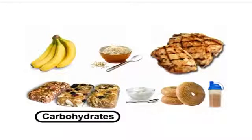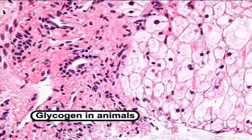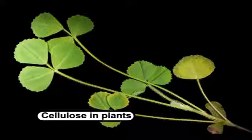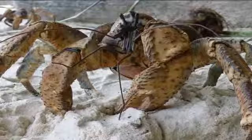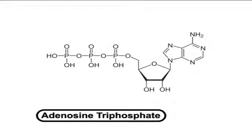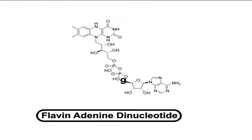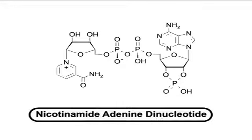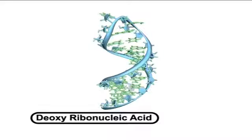Carbohydrates perform numerous other roles in living organisms. They serve as the storage form of energy — for example, starch in plants and glycogen in animals — and as structural components, such as cellulose in plants and chitin in arthropods. Ribose is an important component of coenzymes such as adenosine triphosphate (ATP), flavin adenine dinucleotide (FAD), and nicotinamide adenine dinucleotide (NAD). Carbohydrate also forms the backbone of the genetic molecule RNA, and the related deoxyribose is a component of DNA.